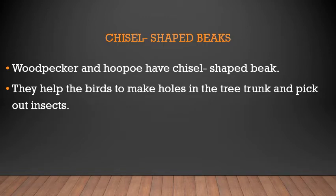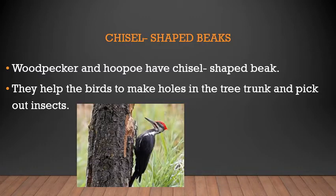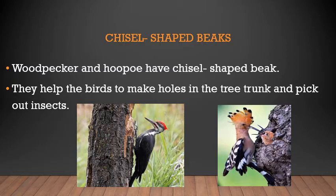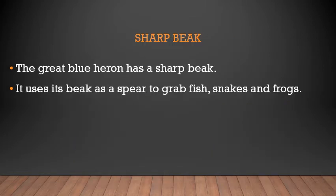Next is the chisel-shaped beak. The woodpecker and hoopoe have chisel-shaped beaks — their beaks are longer and very hard, able to cut through wood. They break open tree trunks to eat the insects living inside. The example is the woodpecker and hoopoe.